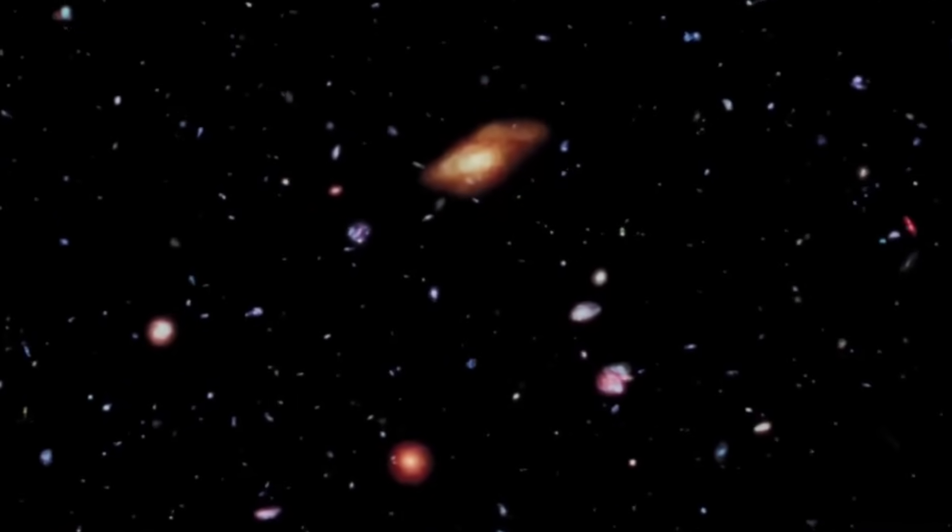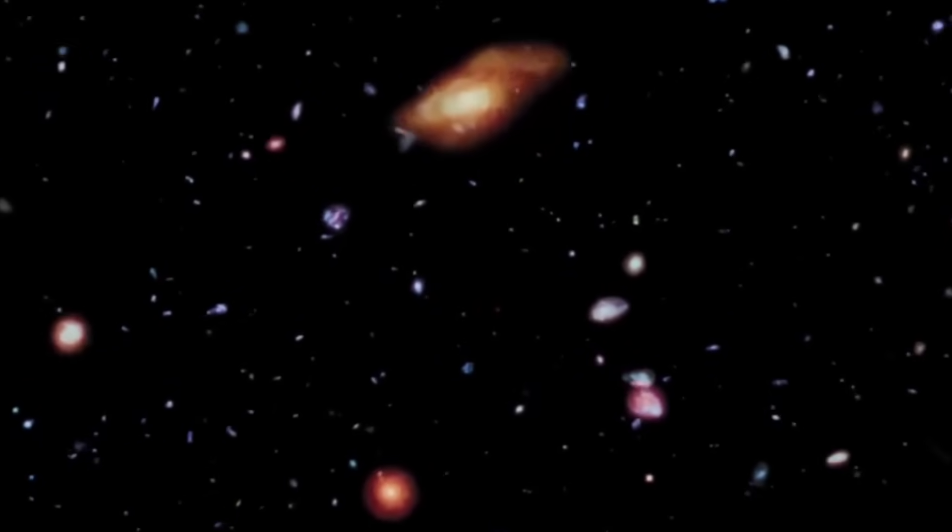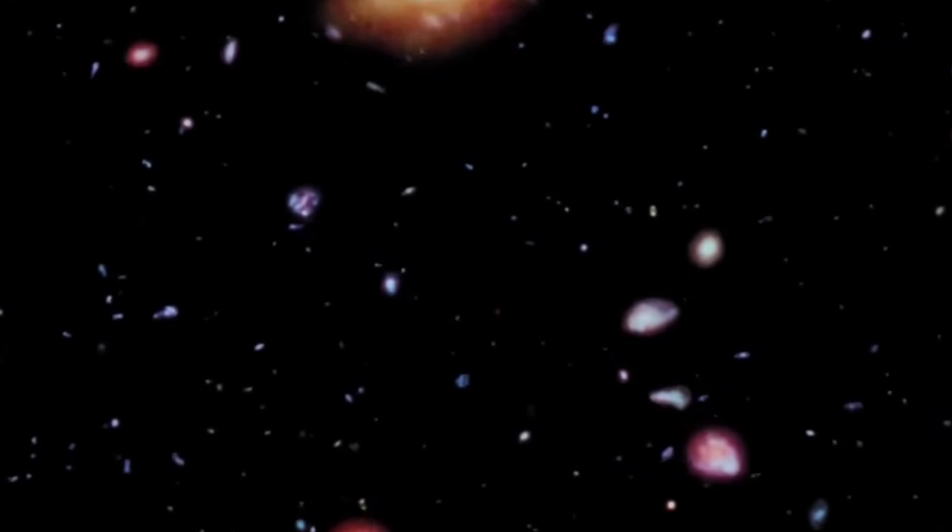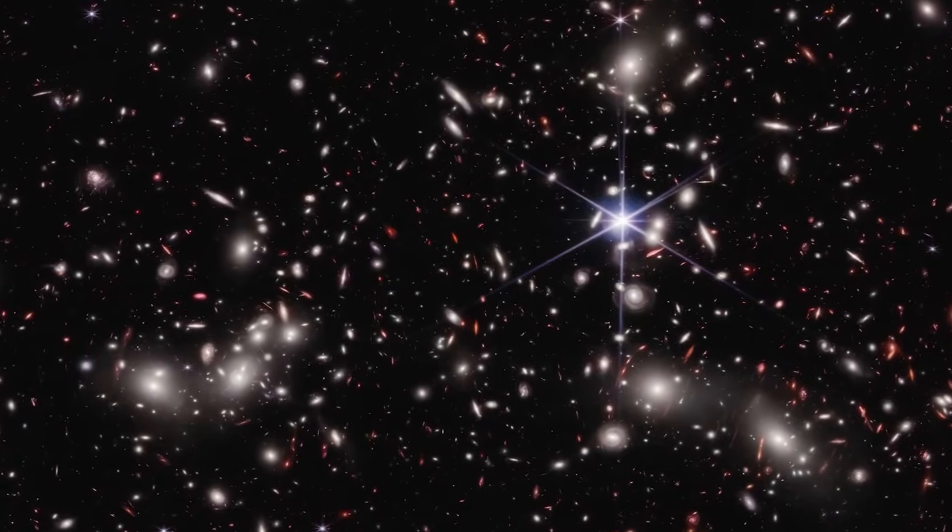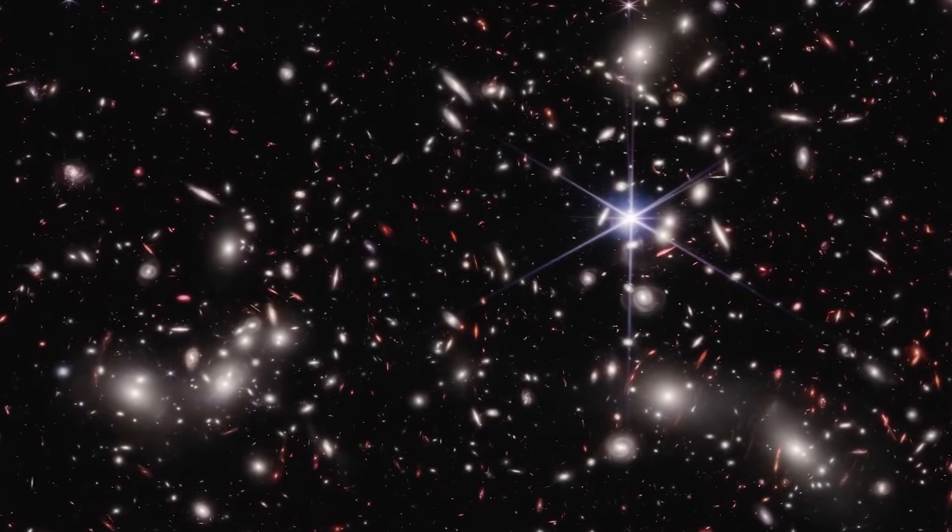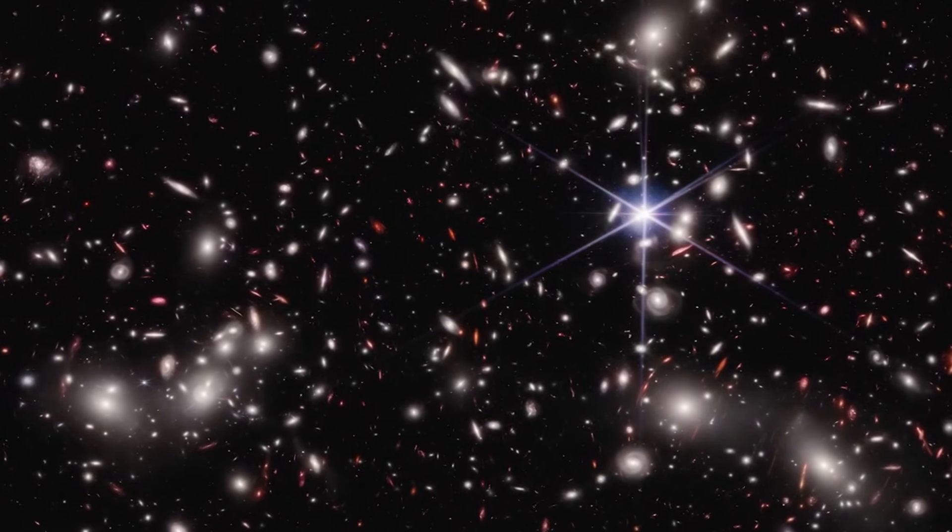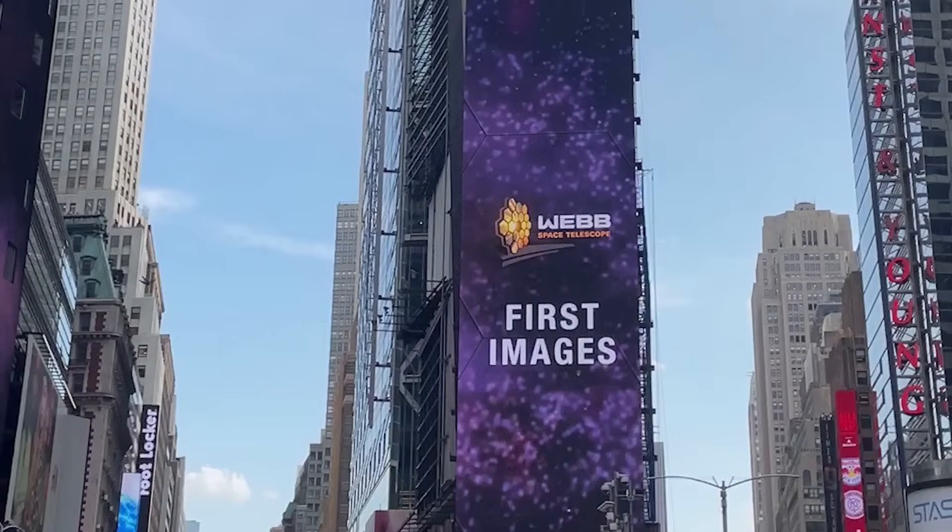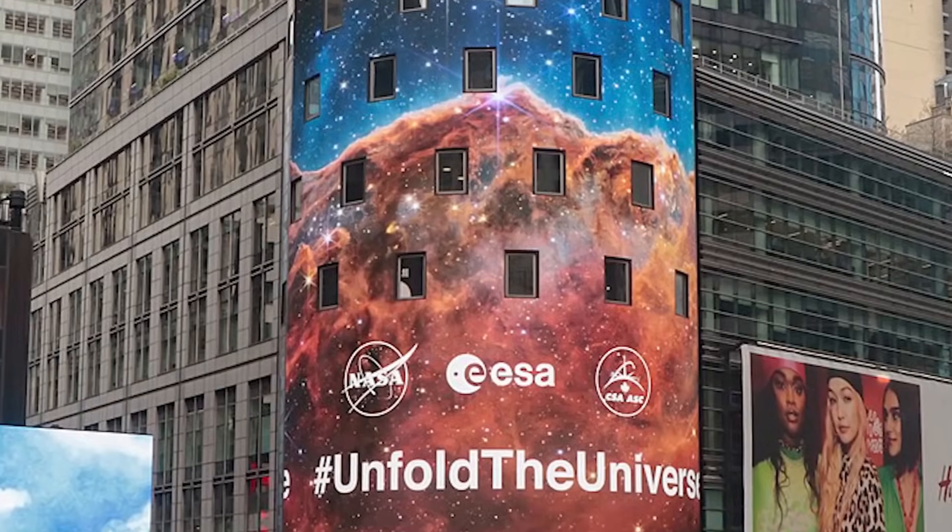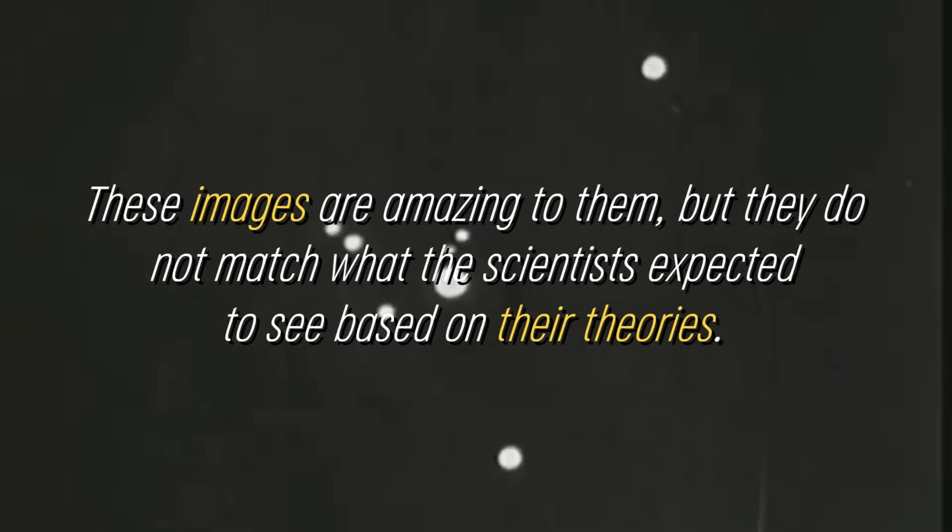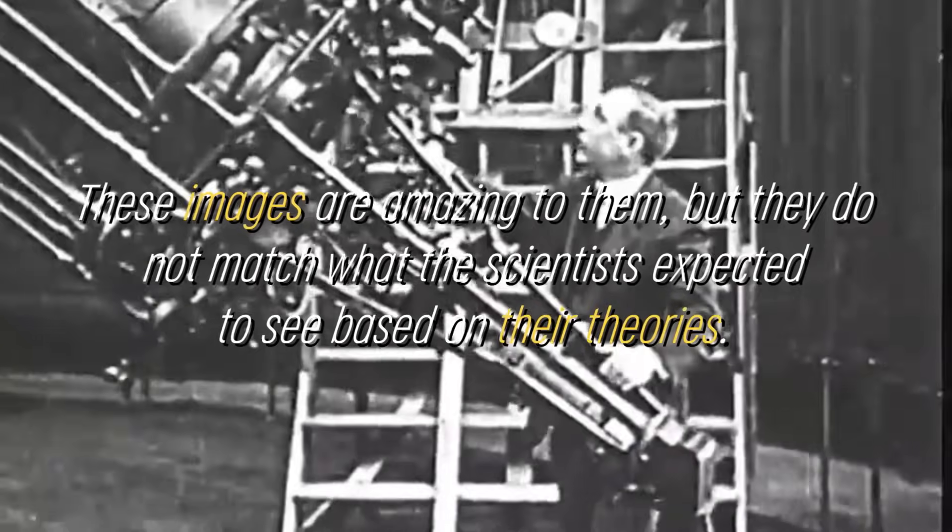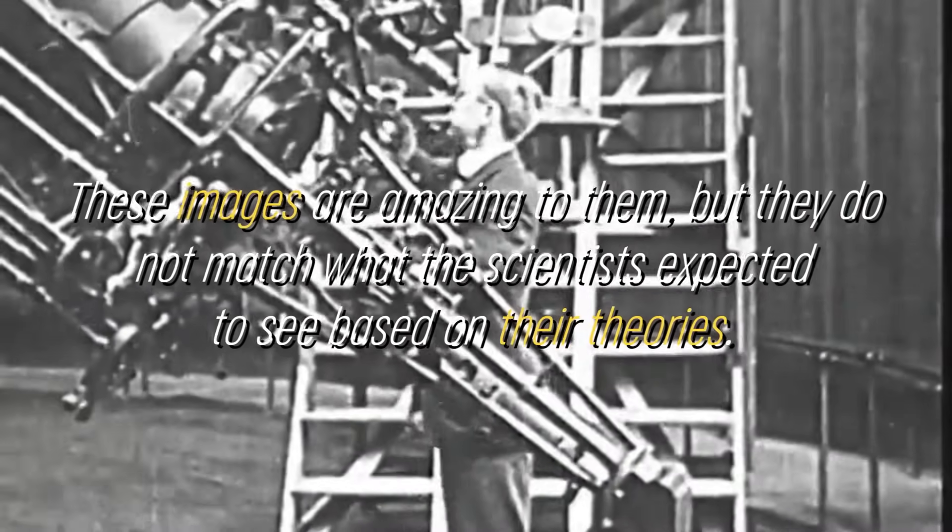The images of new galaxies captured by the James Webb Telescope are absolutely stunning. In a single image, we can see hundreds of galaxies, all together, and the beauty and power of these photos are stunning. However, what seems to amaze the average person is precisely the opposite for researchers. These images are amazing to them, but they do not match what the scientists expected to see based on their theories.